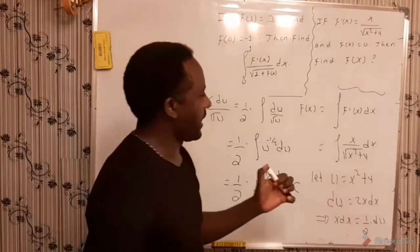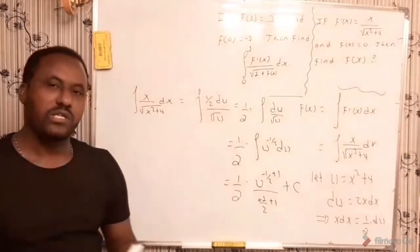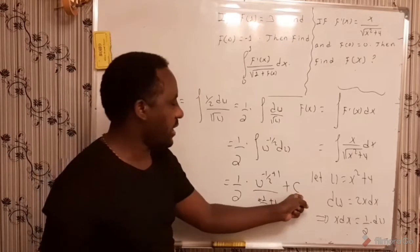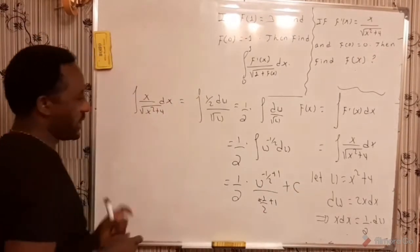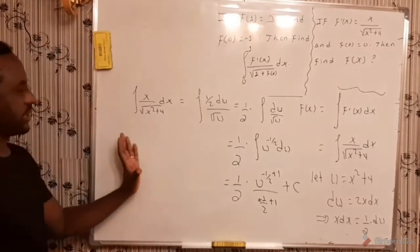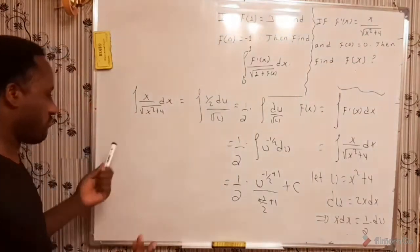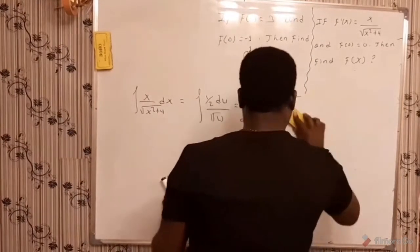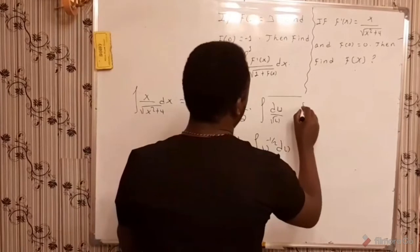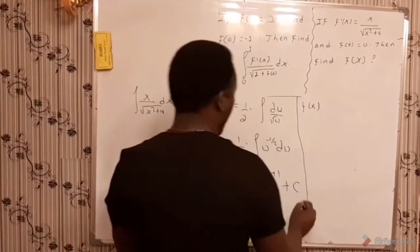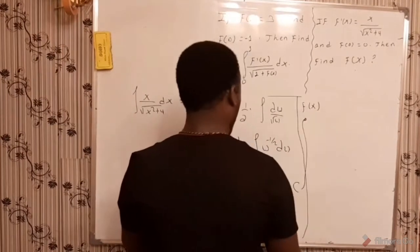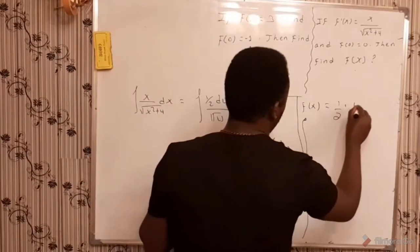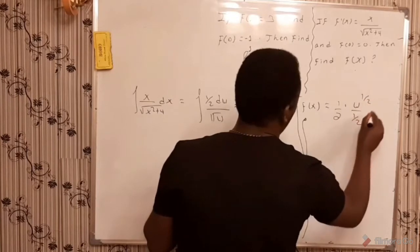Since this is an indefinite integral — meaning there is no upper and lower limit of summation — we must add a certain arbitrary constant c. Computing, f of x is given by one over 2 times u raised to one half over one half, plus c. That is one over 2 times 2 times u raised to one half, plus c, which simplifies to the square root of u plus c.